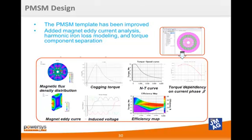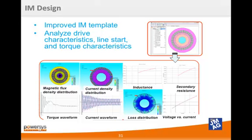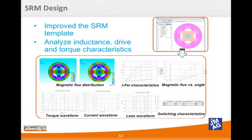As far as individual templates, many improvements have been made. For example, in the permanent magnet synchronous machine template, we added a magnet eddy current analysis, harmonic iron loss modeling, and torque component separation. In the induction machine template, you can now analyze drive characteristics, line start response, and torque characteristics. In switch reluctance machines, you can now analyze inductance in the aligned and unaligned positions, as well as drive and torque characteristics.